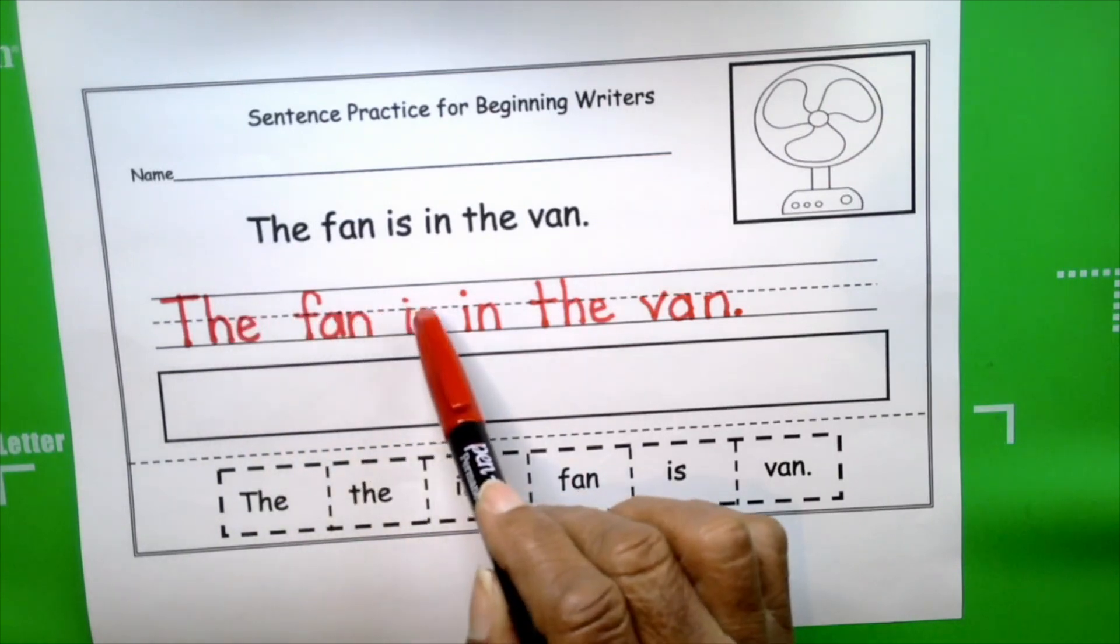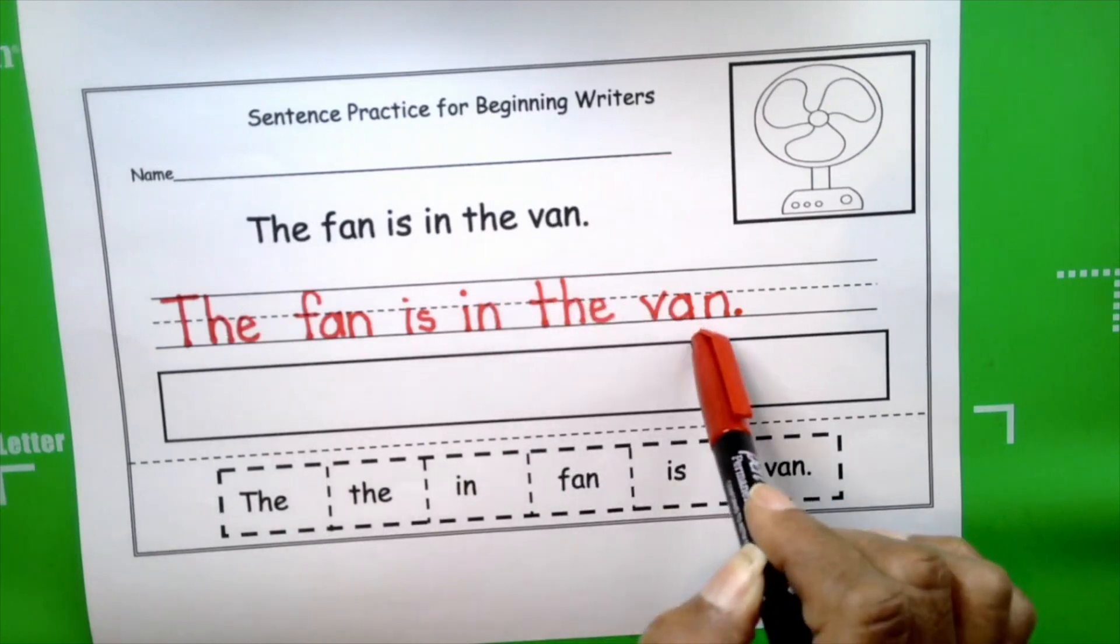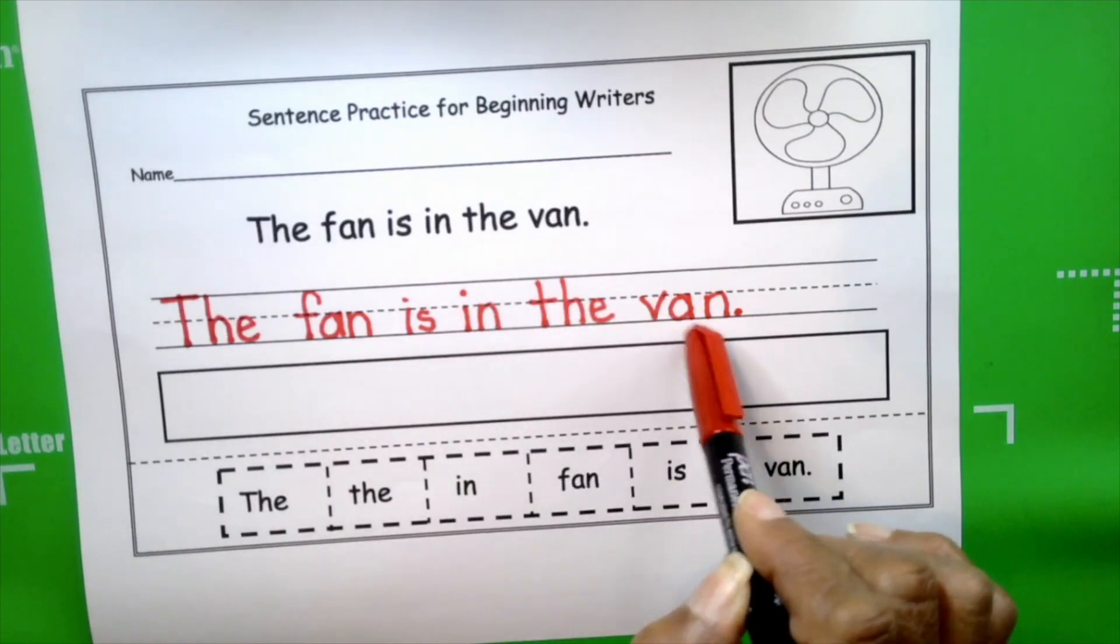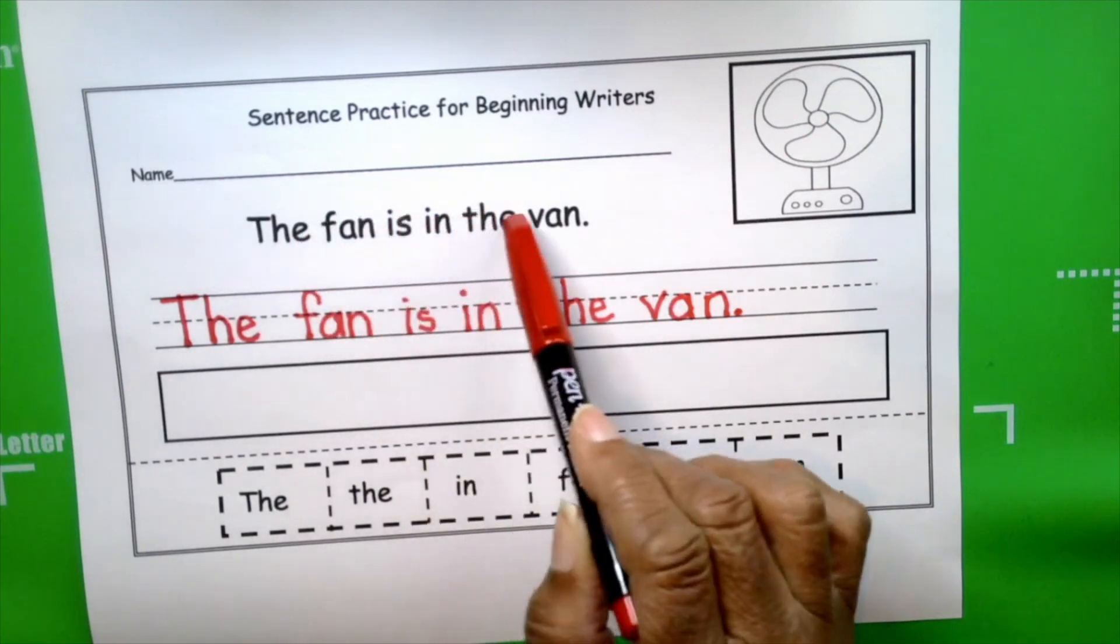We're going to count the number of words in this sentence. One, two, three, four, five, six. There are six words that make the sentence, the fan is in the van.